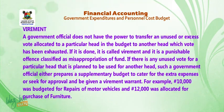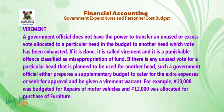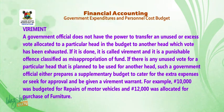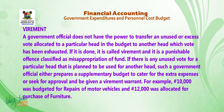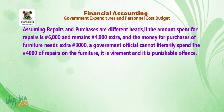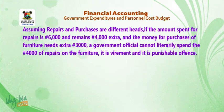Virement: a government official does not have the power to transfer an unused or excess vote allocated to a particular head in the budget to another head whose vote has been exhausted. If it is done, it is called virement and it is a punishable offense classified as misappropriation of funds. If there is any unused vote for a particular head that is planned to be used for another head, such a government official must either prepare a supplementary budget or seek approval and be given a virement warrant. For example, ₦10,000 was budgeted for repairs of motor vehicles and ₦12,000 was allocated for purchase of furniture. If repairs spent ₦6,000 leaving ₦4,000 unused, and furniture needs an extra ₦3,000, a government official cannot literally spend the ₦4,000 from repairs on the furniture — it is virement and a punishable offense.